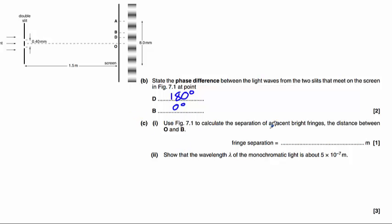For part C(i) we need to calculate the separation of adjacent bright fringes, the distance between O and B. Now they have given us 8mm here and we can see that is the separation between 1, 2, 3, 4 fringes.